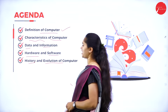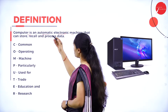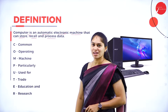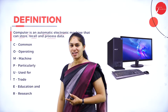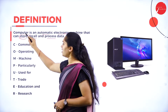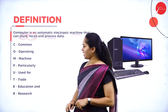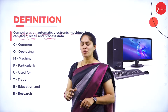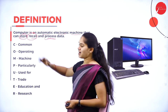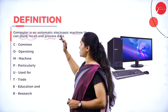Let's see the definition of a computer. A computer is an automatic electronic machine that can store, recall, and process data. It has the ability to store whatever data we feed as input, recall it when needed, and produce an output by processing that data. So a computer is an automatic electronic machine that can store, recall, and process data.